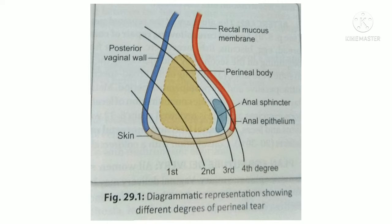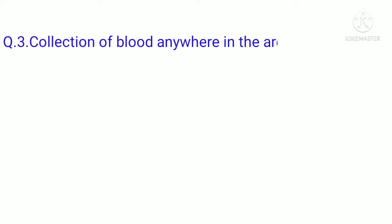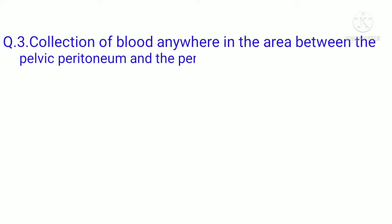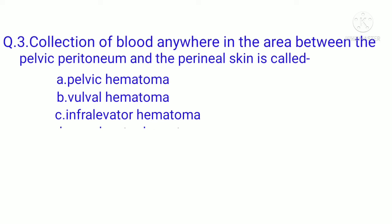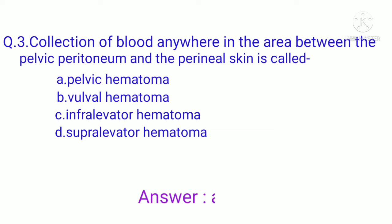In the diagram you can see the degrees of perineal tear clearly illustrated. Question 3: Collection of blood anywhere in the area between the pelvic peritoneum and the perineal skin is called — Option A: pelvic hematoma, Option B: vulval hematoma, Option C: infralevator hematoma, Option D: supralevator hematoma. The correct option is A, pelvic hematoma.